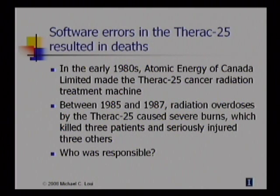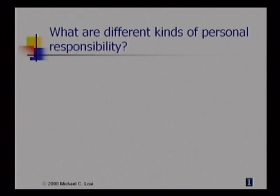So we might ask, who was responsible? The operator who administered the massive radiation overdoses, which produced the severe burns. The software developers, who wrote and tested the control software, which contained several serious errors. The system engineers, who neglected to install the backup hardware safety mechanisms that had been used in previous versions of the machine. The manufacturer, AECL. The government agencies. In fact, all were responsible in different ways. So there are different kinds of responsibility.